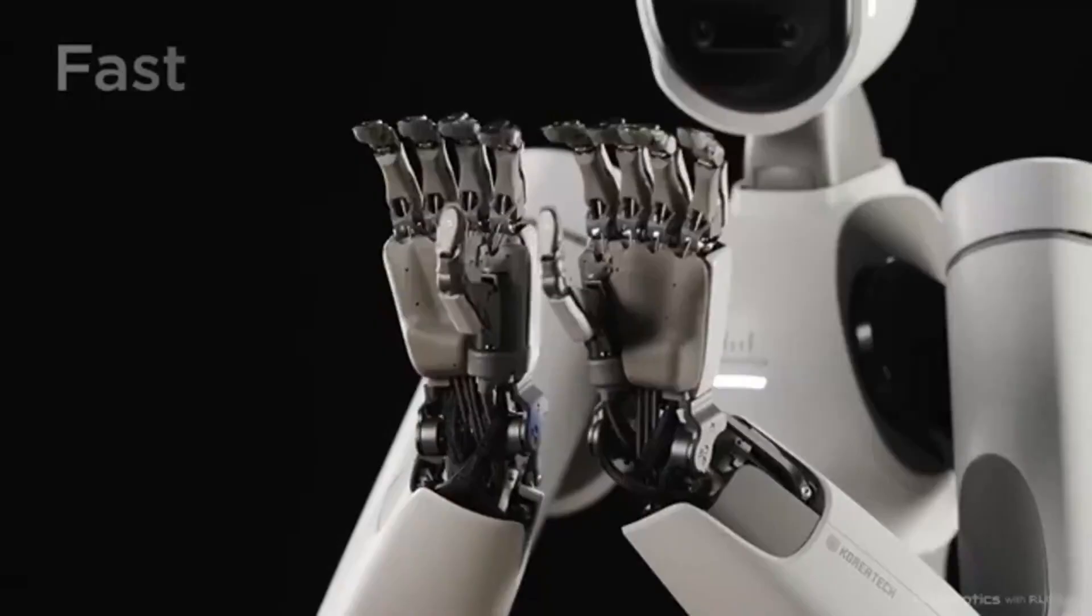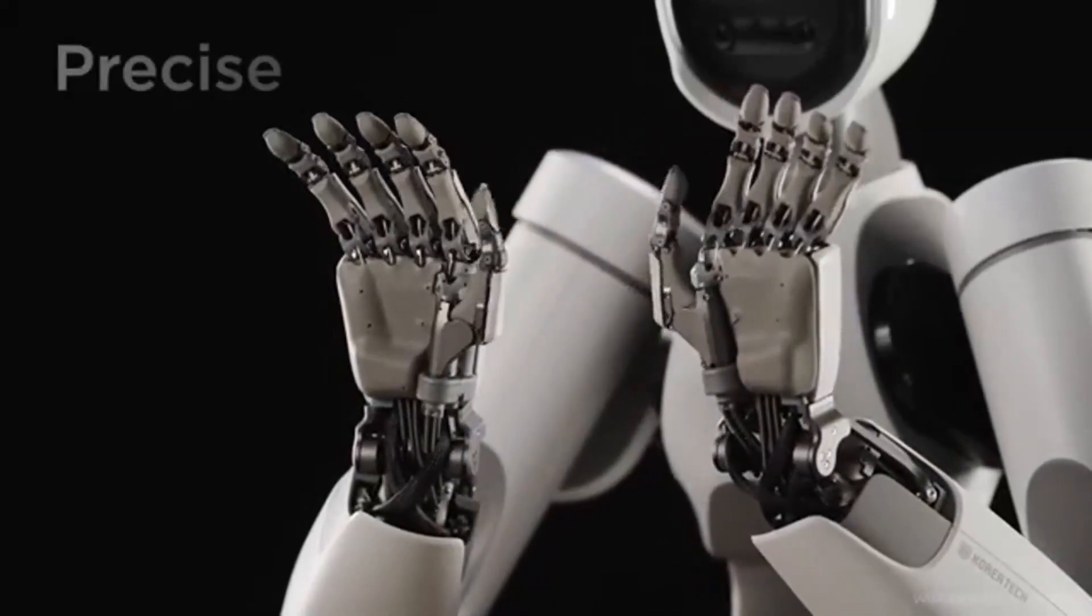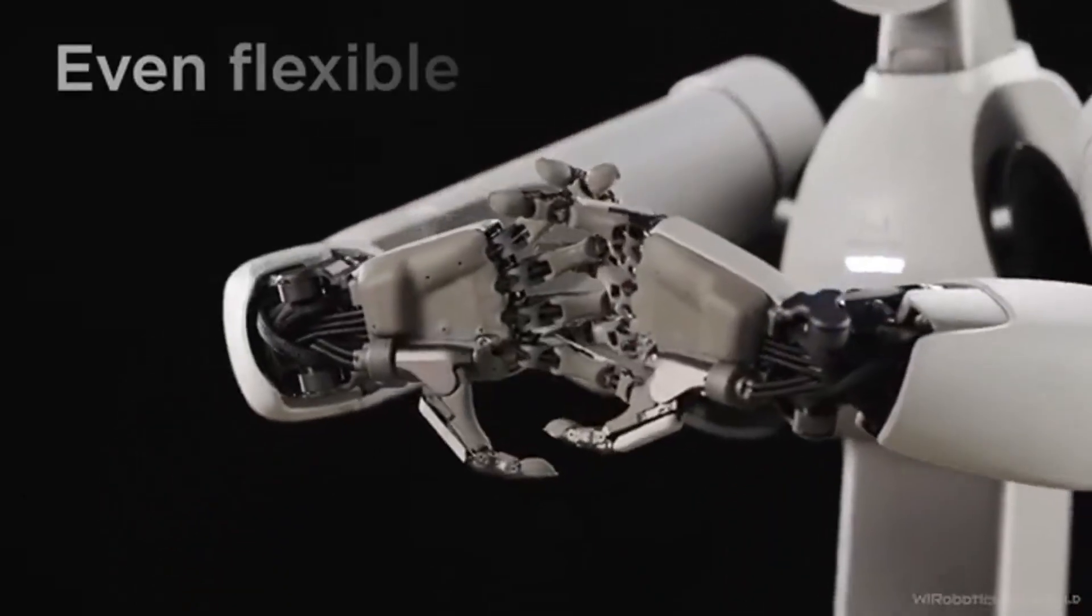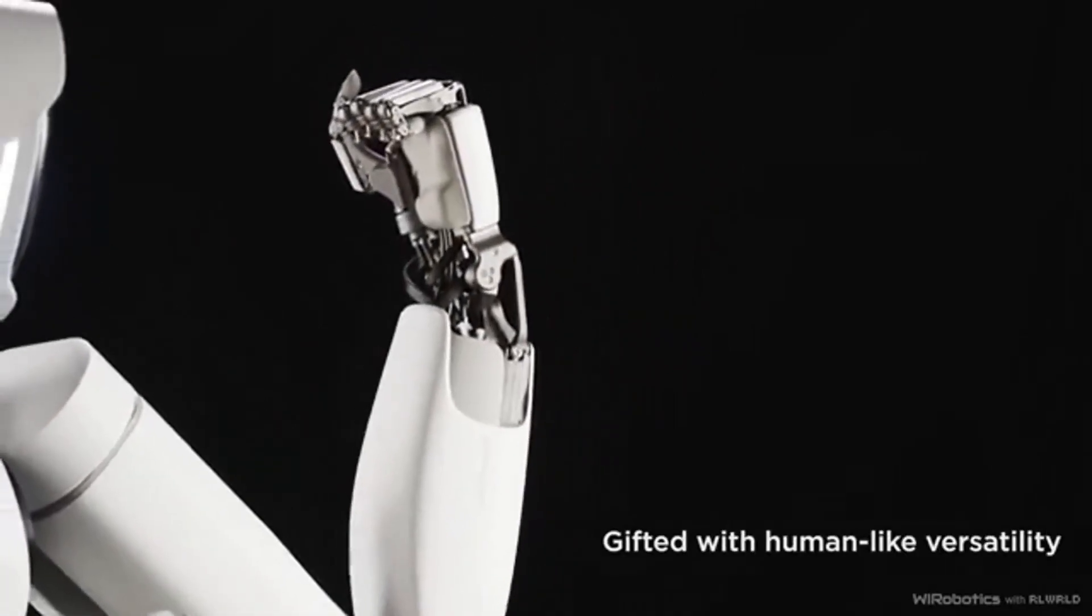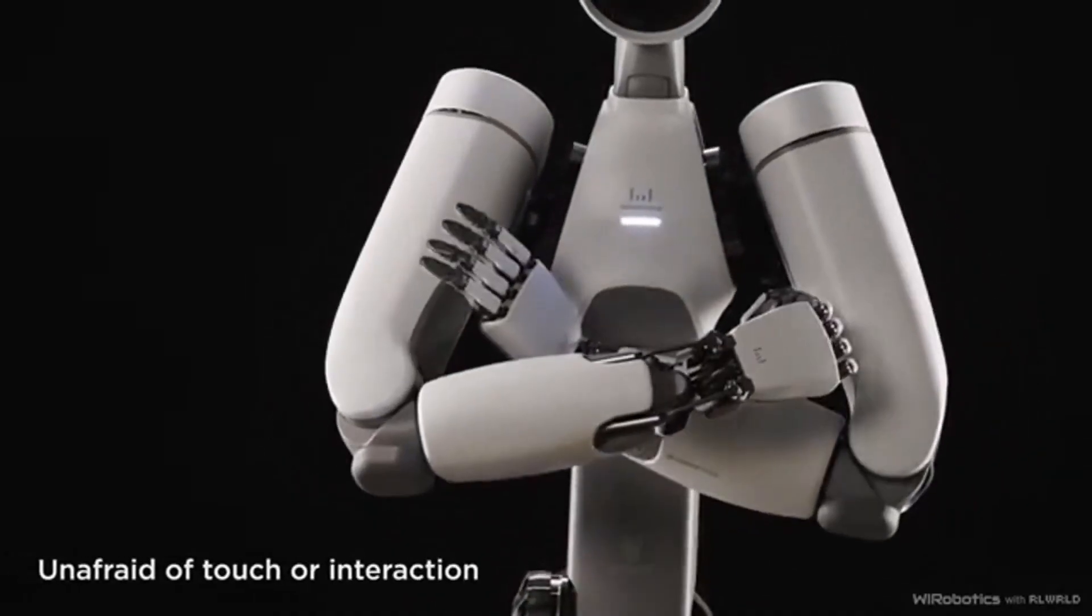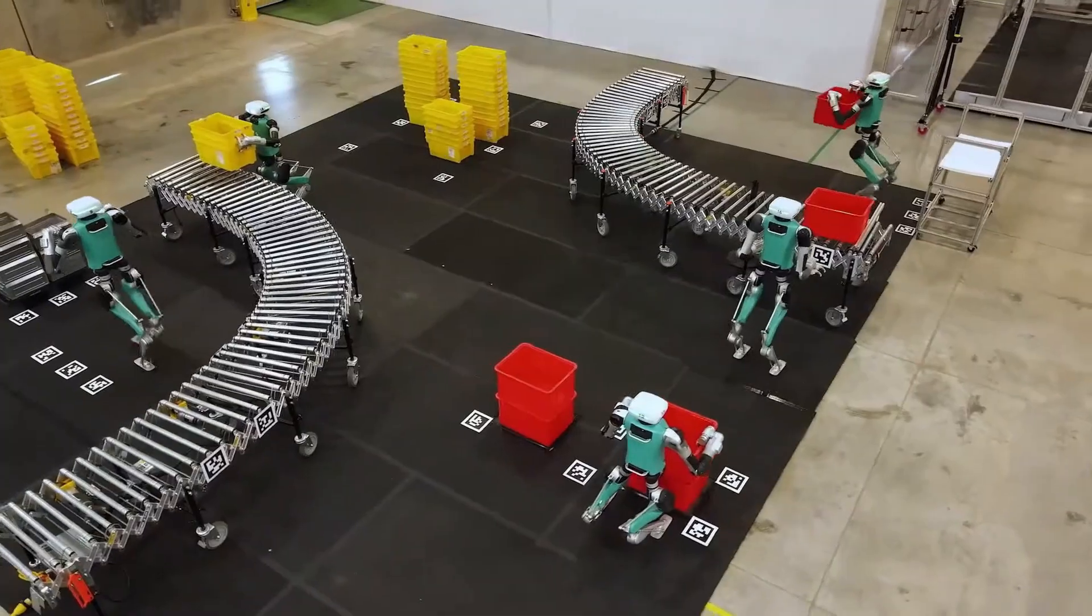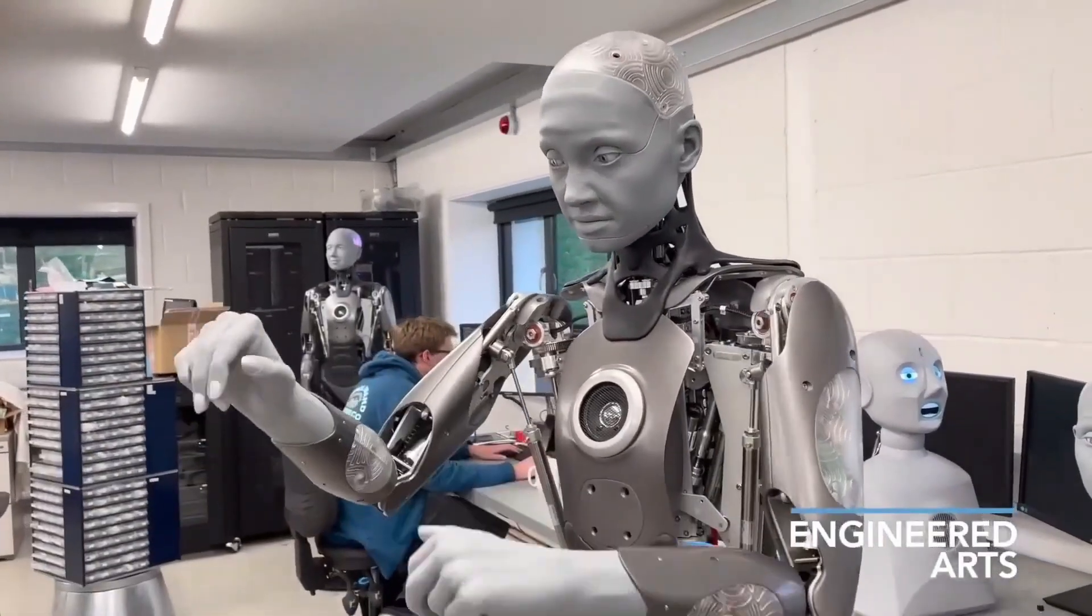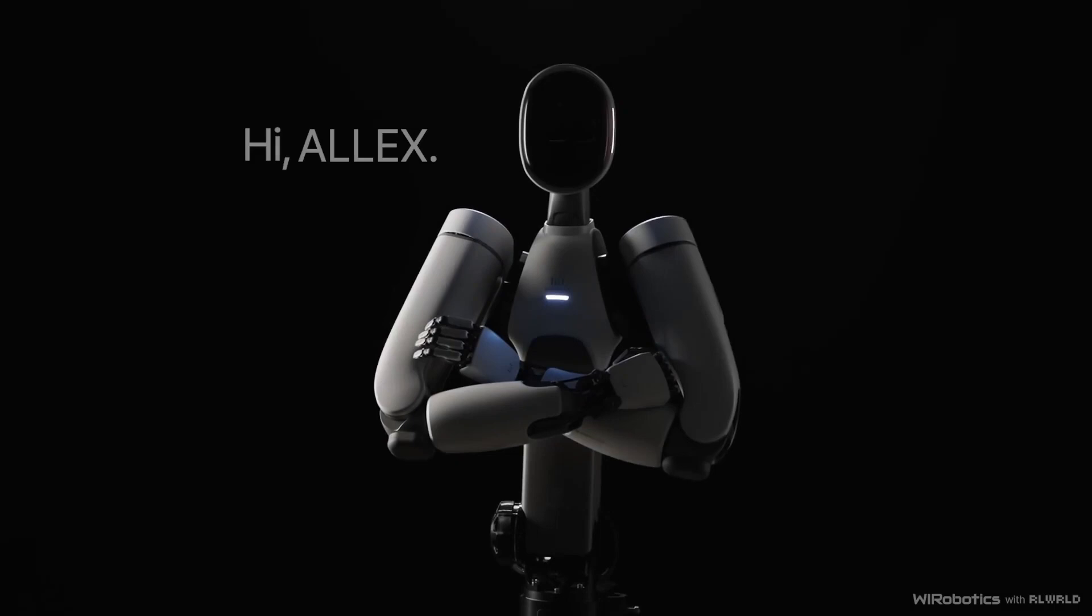Another big part of what makes this robot impressive is the combination of strength and sensitivity. WI Robotics has built the hands so that they can deliver superhuman grip force when required, but also release into feather light precision when needed. That's a balance you don't see often. Robots either tend to be too rigid and strong, great for heavy lifting but terrible for delicate work, or they're soft and gentle but too weak to be useful in tougher environments. Alex appears to bridge that gap.